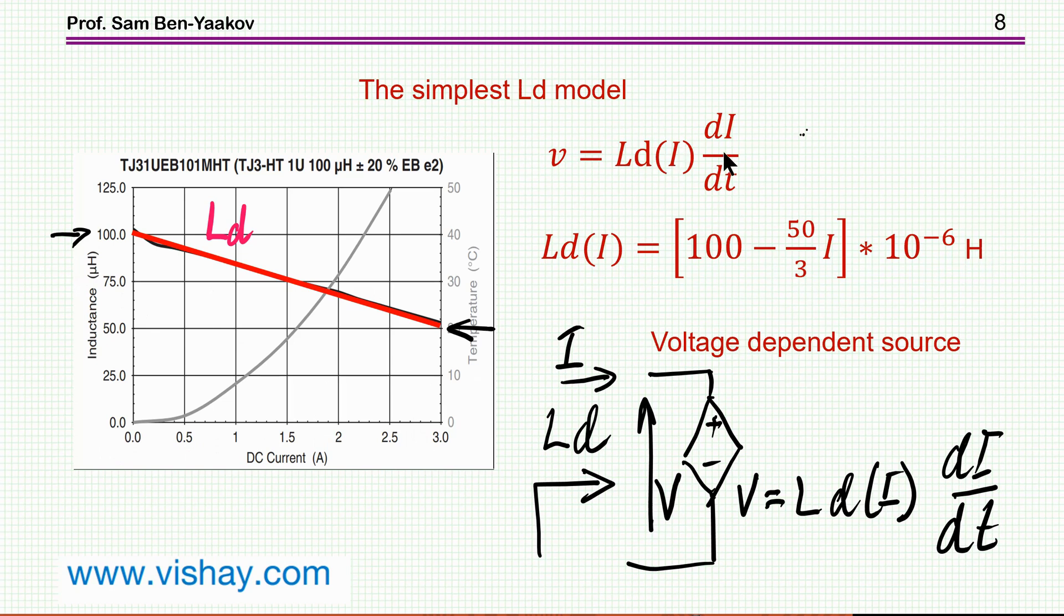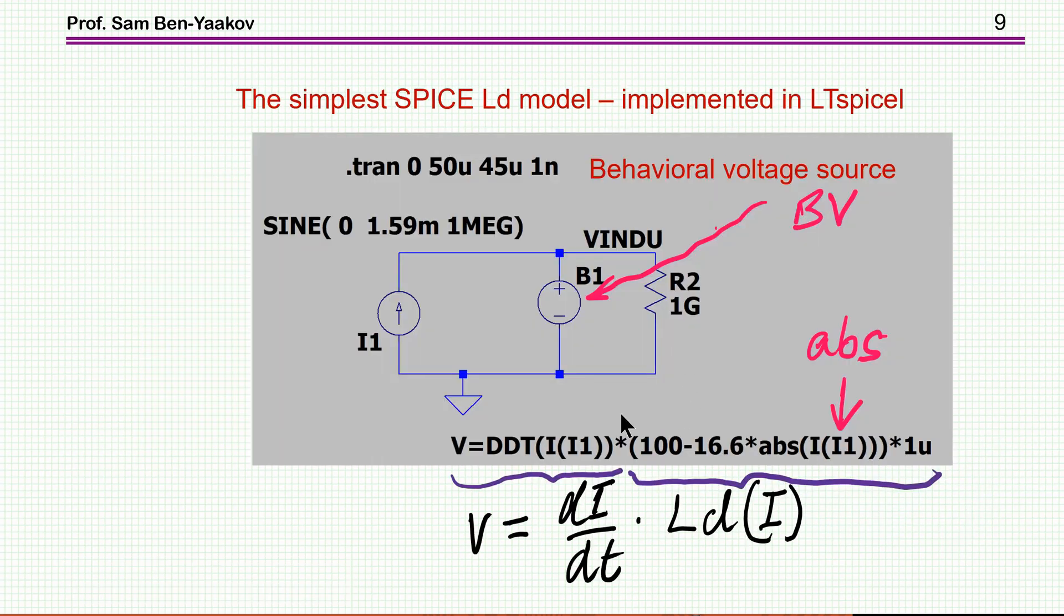So once I have this expression, I can actually model this inductor as a voltage source that will behave like this expression here times dI/dt. This will be a behavioral voltage dependent source. Now in LTSpice, we do have this behavioral voltage source. It's called BV.